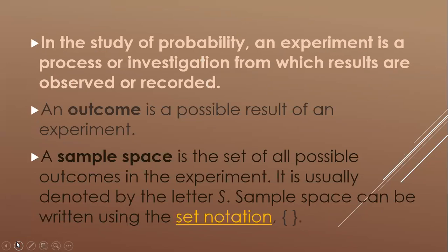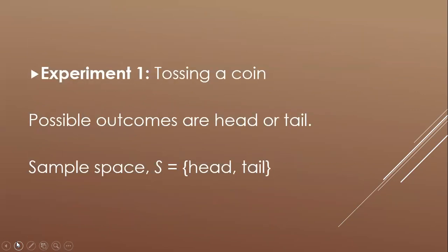In the study of probability, an experiment is a process or investigation from which results are observed or recorded. An outcome is a possible result of an experiment. A sample space is the set of all possible outcomes in the experiment, usually denoted by the letter S, and can be written using set notation. For example, tossing a coin: the sample space S is {head, tail}.